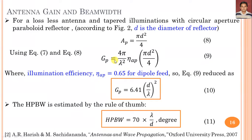With illumination efficiency η_AP = 0.65 (65%) for a dipole feed or non-directional radiation characteristics feed, the gain formula reduces to G_P = 6.41·(D/λ)². This is a very important equation required for calculating problems based on the paraboloid reflector or prime focus paraboloid reflector. This equation applies specifically when η_AP = 0.65; if a different value is given, the general formula must be used.